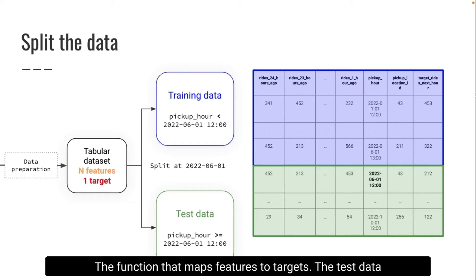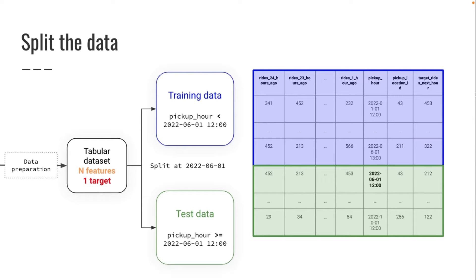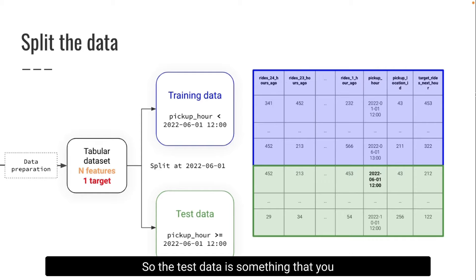The test data is something that we do not use at all when we create a model. We only use it at the very end to validate our model. So the test data is something that you separate at the beginning and you don't touch at all. Only at the very end, when you're done creating your model, you use it to evaluate, to assess how good your model is, but you don't use it to tune parameters of your model, and that's very important.